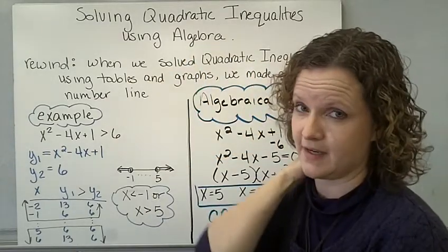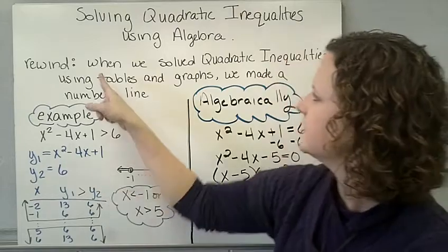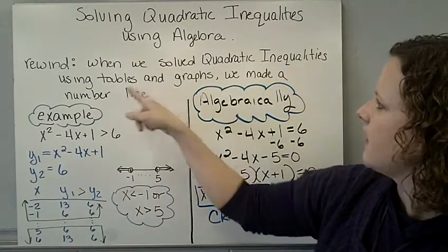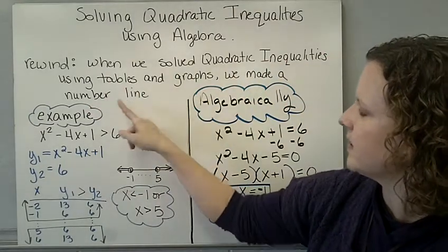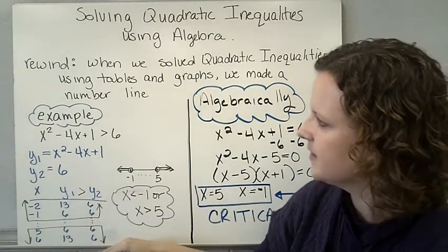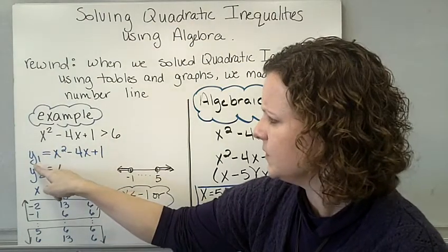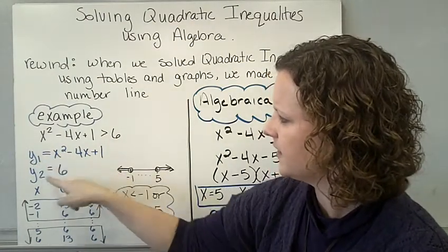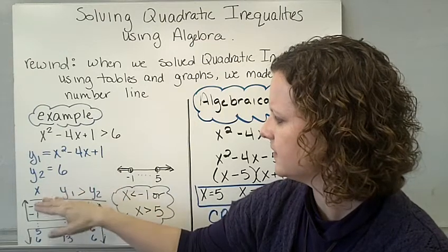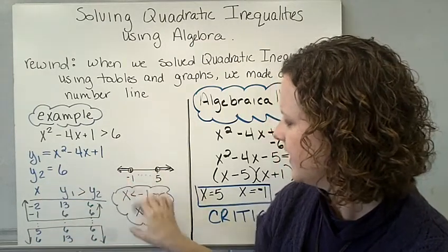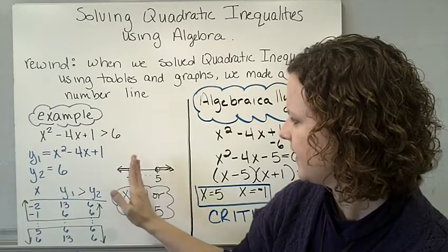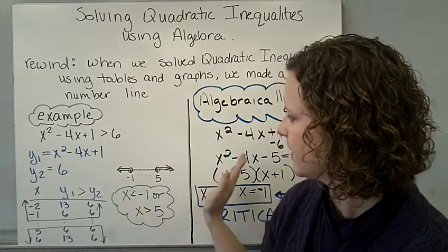So let's rewind. Last time we worked with quadratic inequalities. When we solved quadratic inequalities, we used tables and graphs, we made a number line. There's our example. We set y1 equal to the left side of the equation, y2 equal to the right, looked at a table and a graph, and got our answer. Okay, x was less than negative 1, greater than 5.